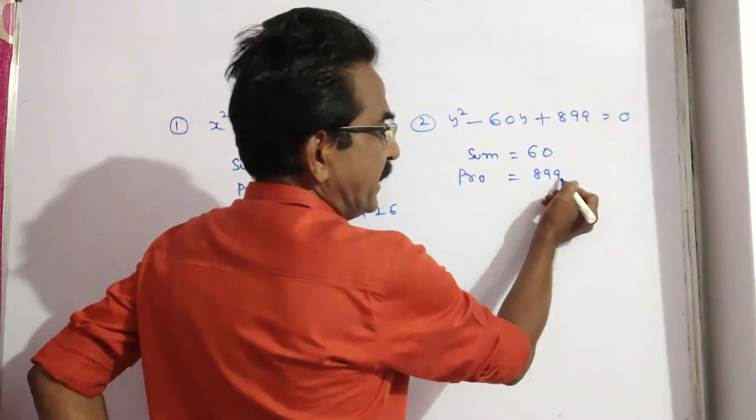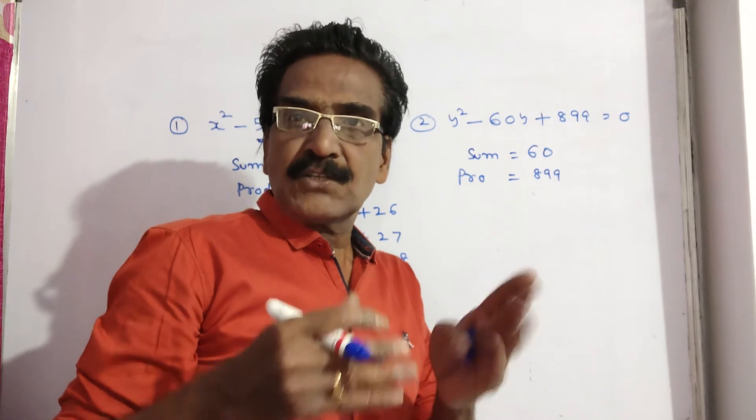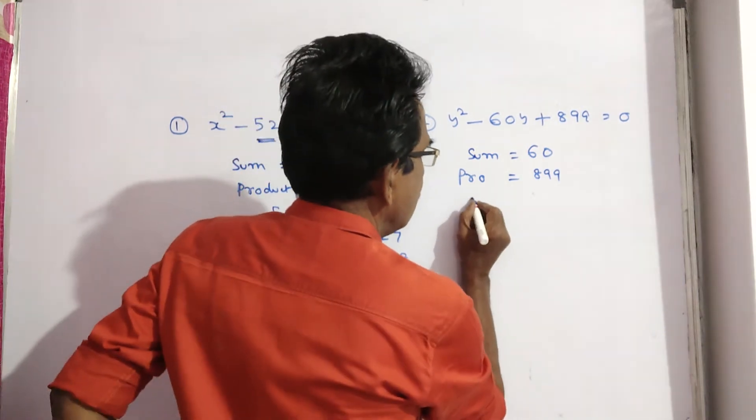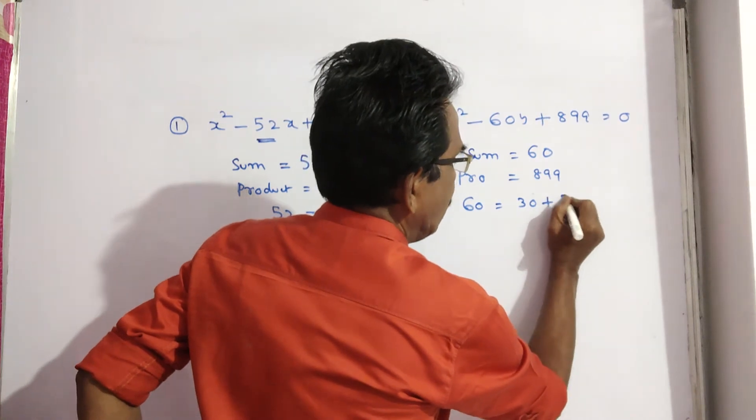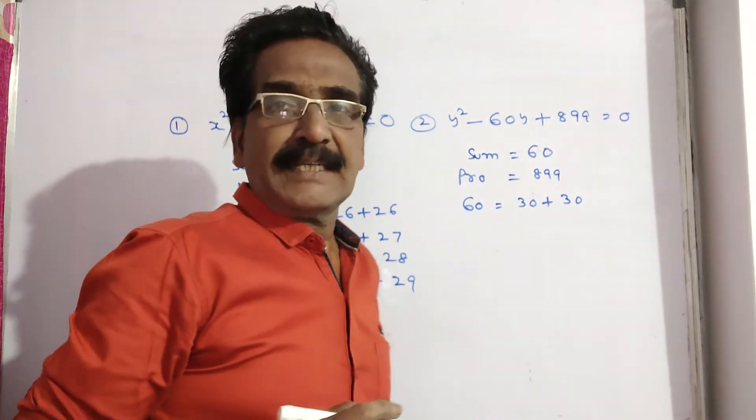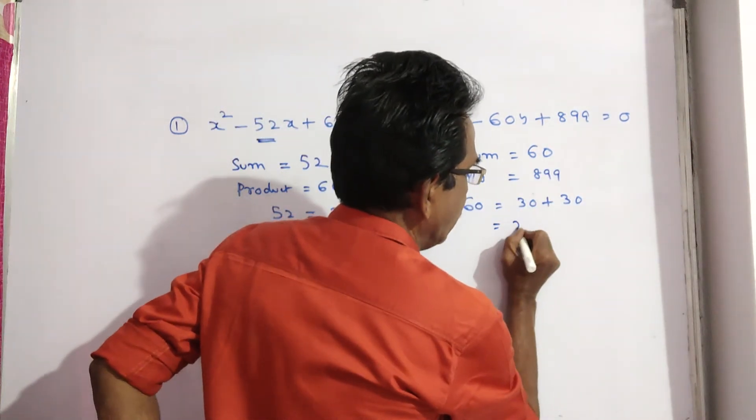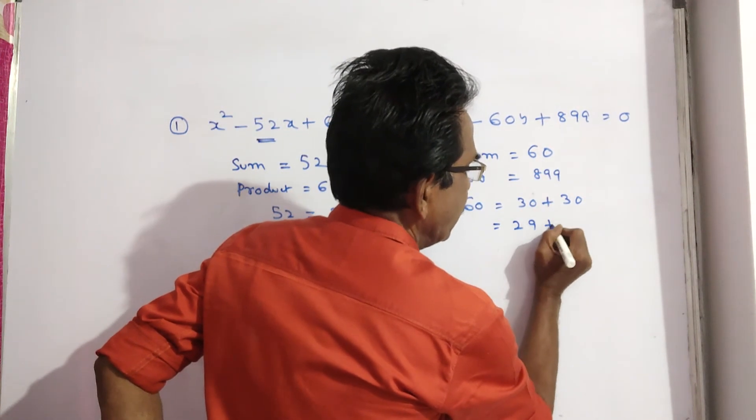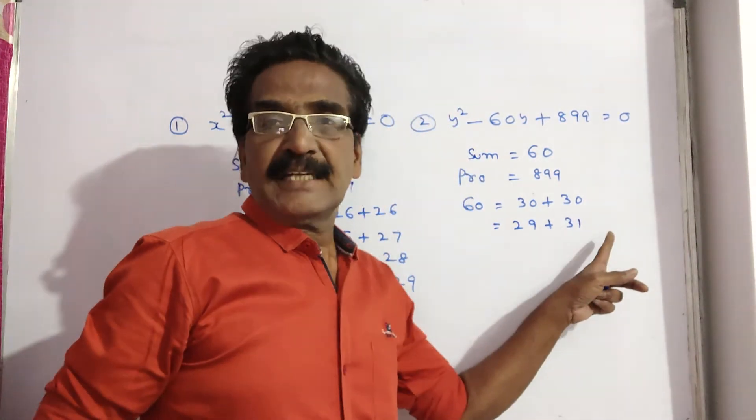In the same way, here, 899 is closer to square of 30. 60 is equal to 30 plus 30. But 30 times 30 is 900. Here it is 899. So you write the preceding number, 29. Here you write the after number, 31. 29 into 31.